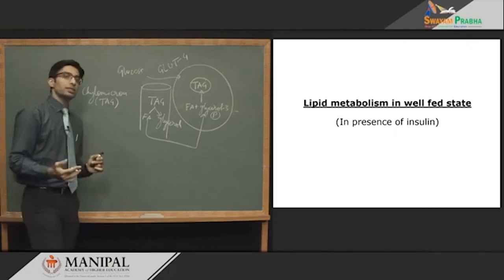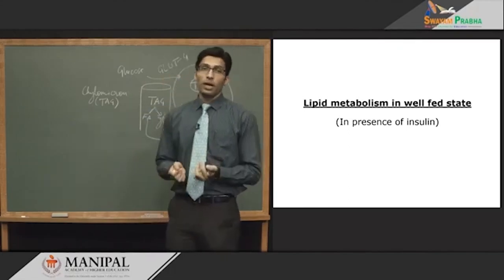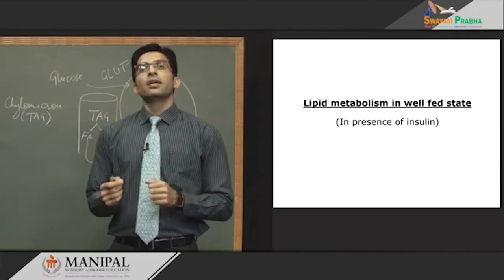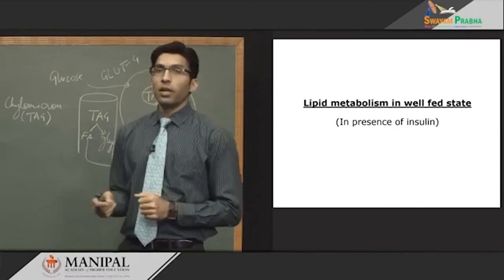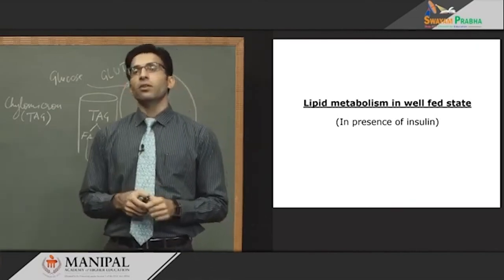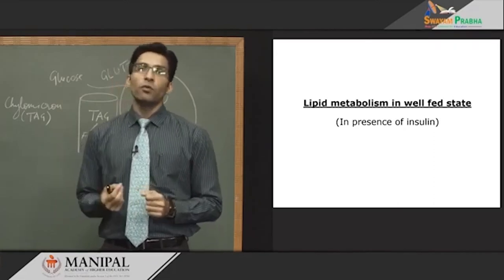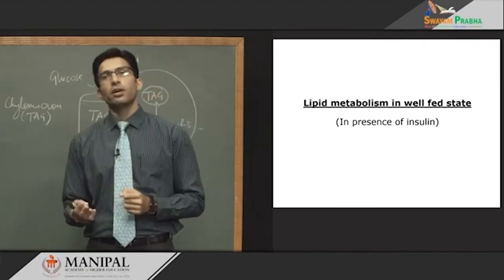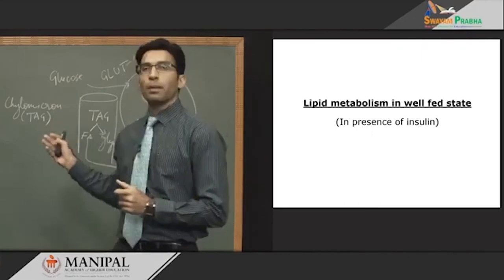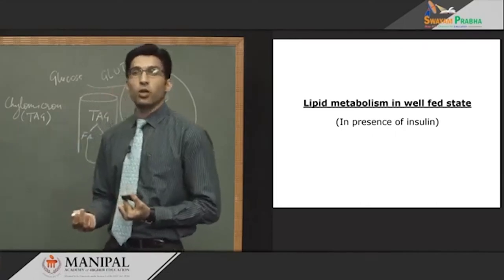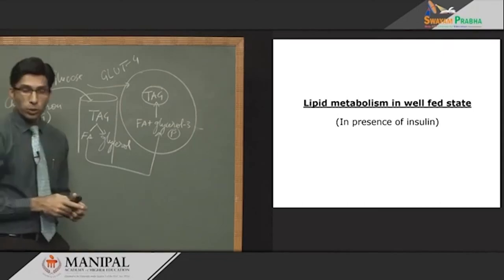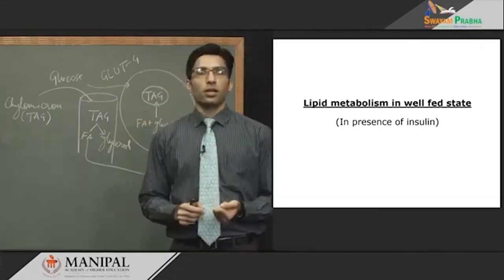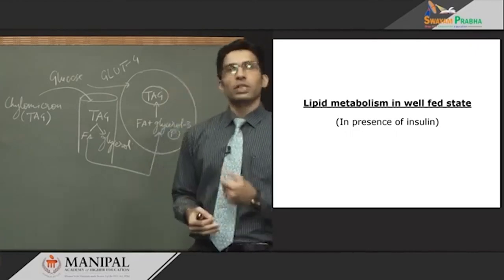At the liver level, insulin increases fatty acid synthesis — increased carbohydrate in the well-fed state increases fatty acid synthesis in the liver. This fatty acid combines with glycerol to form triacylglycerol in the liver, which is then packed into VLDL (very low density lipoprotein). VLDL transports endogenous lipid from the liver to extrahepatic tissues. When this triacylglycerol-rich VLDL passes through capillaries near adipose tissue, lipoprotein lipase acts on it again.